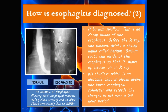pH studies involve an electrode placed above the lower esophageal sphincter that records changes in pH over a 24-hour period. Since the esophagus is normally not an acidic environment, if significantly decreased pH levels — indicating an acidic environment — are recorded in the esophagus during the 24-hour study, this indicates acid reflux and can be very useful in diagnosing esophagitis.